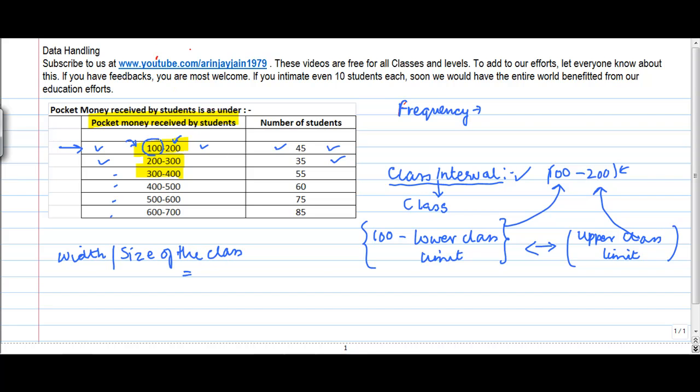This is basically given by the upper class limit which is let's say two hundred in this case minus the lower class limit which is hundred in this case. So the width of a class or the size of the class is the difference between the upper class limit and the lower class limit.